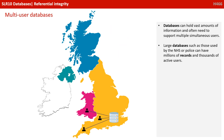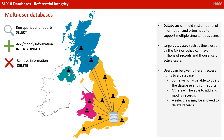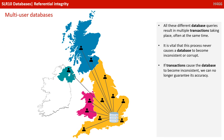As we know by now, databases can hold vast amounts of information and often need to support multiple simultaneous users. Large databases, such as those used by the NHS or police, can have millions of records and thousands of active users. Users can be given different access rights to a database. Some will only be able to query the database and run reports, whereas others will be able to add and modify records, and a select few may be allowed to delete old records. All these different database queries result in multiple transactions taking place, often at the same time.